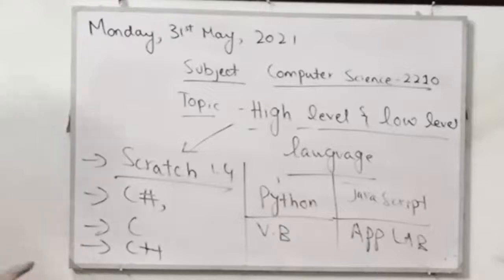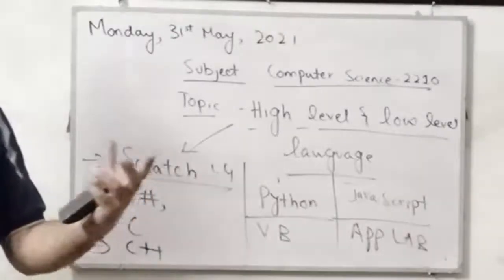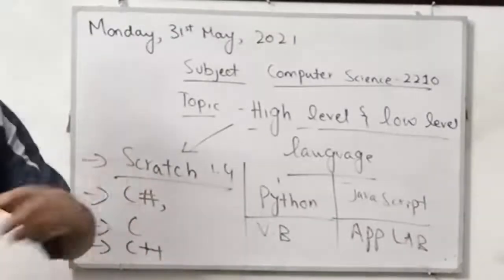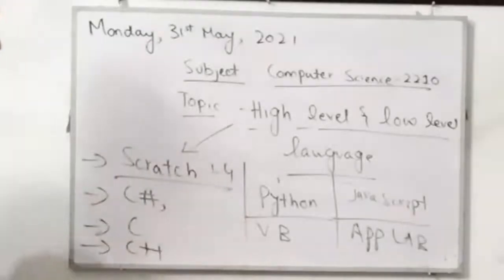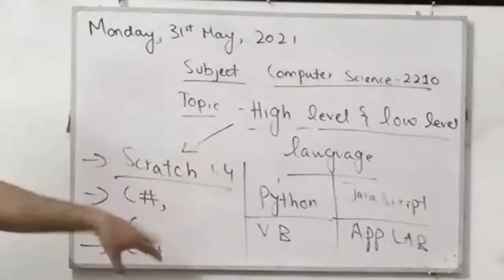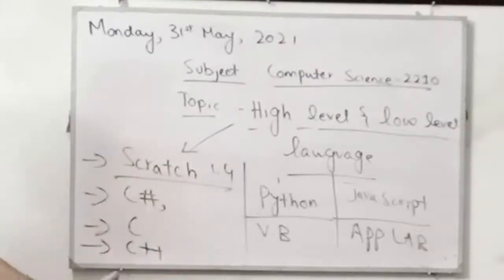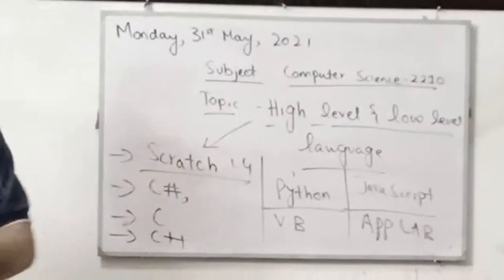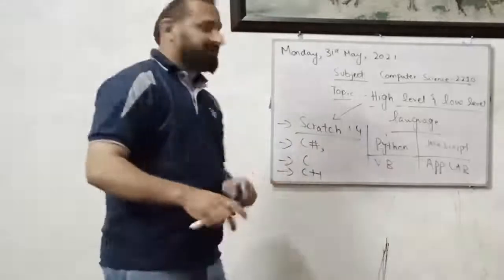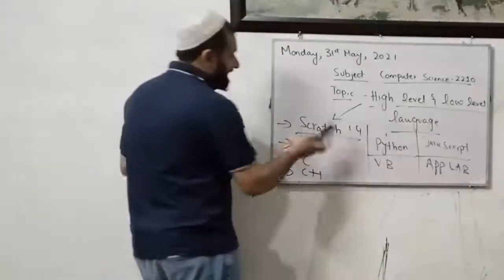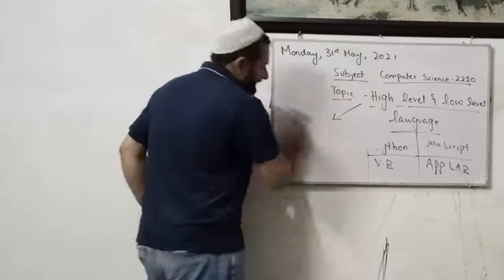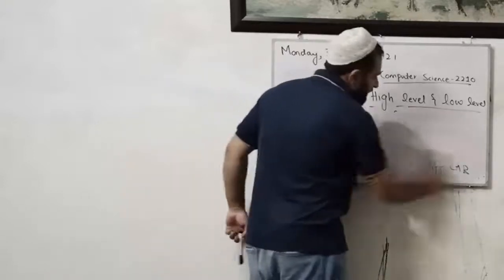Using these high level languages you can build different softwares, desktop applications, games, and more. These are the examples of high level languages — they are close to human language, which we can understand. So high level languages are clear now.